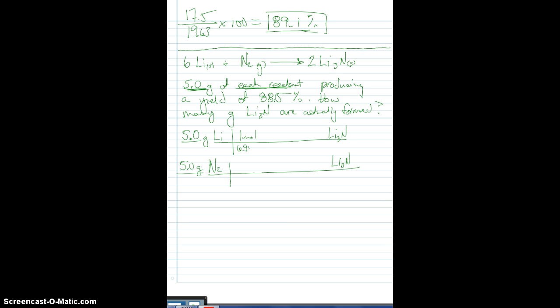So we'll do this real quickly here, and then we'll see what we get for our theoretical yield. So 1 mole over the molar mass of lithium, we have a 6 to 2 ratio of lithium to lithium nitride. Molar mass of lithium nitride, 34.82, 1 mole there. And let me run it through here on the next one. 1 mole over molar mass of nitrogen, 28 grams of N2. We have a 2 to 1 ratio, and then we're going to go 34.82 again.